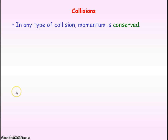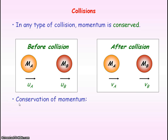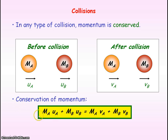In any type of collision, momentum is conserved, assuming the collision is a closed system with no external forces acting. If we consider two objects A and B which have initial velocities uA and uB before the collision, and after the collision they have velocities vA and vB, then applying the principle of conservation of momentum: the initial momentum of A plus the initial momentum of B will equal the final momentum of A plus the final momentum of B. So our total momentum is constant.